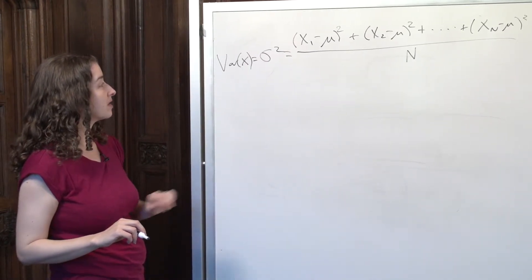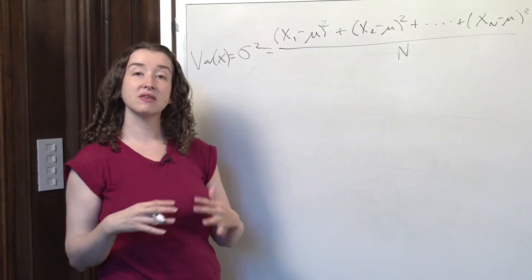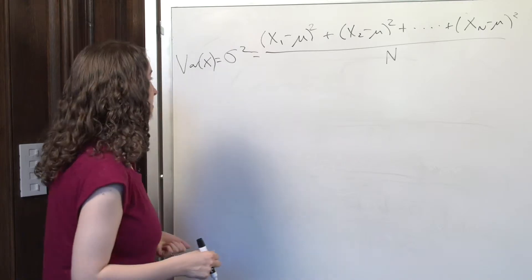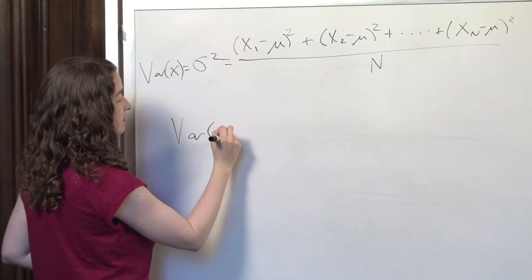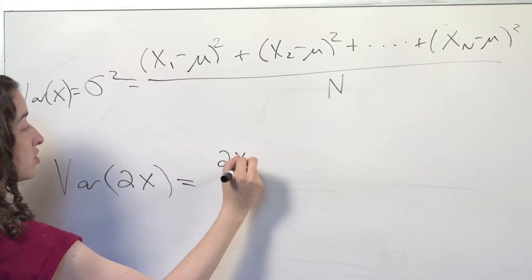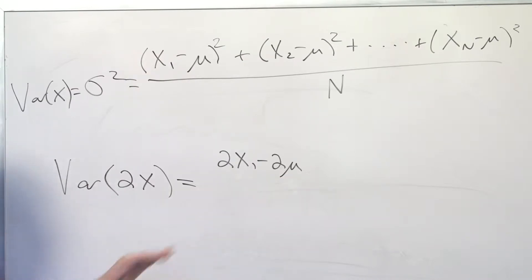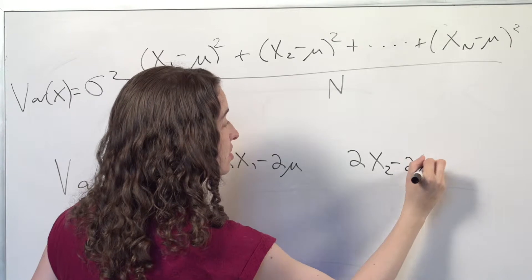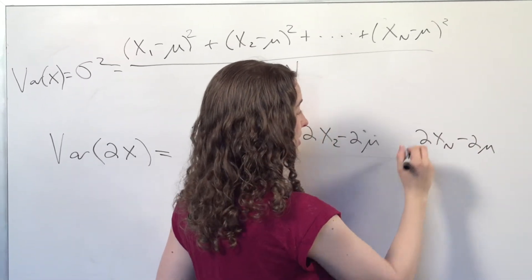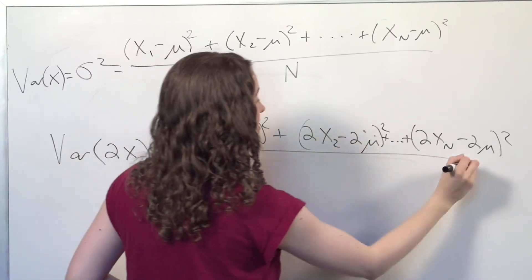What if the quantity we're interested in is not x itself, but rather a times x? I want to know not only the variability — the variance across the population in terms of people's income — but if we think of people's income over two years, what's the variability in that? In other words, I'm interested in the variance of the quantity 2 times x. So I'm going to plug in 2x everywhere I had an x. Now I've got 2 times the first person's income minus 2 times the mean of all incomes, and 2 times the last person's income minus 2 times the mean. I'll add up the squared values of all these differences and divide by how many there are.